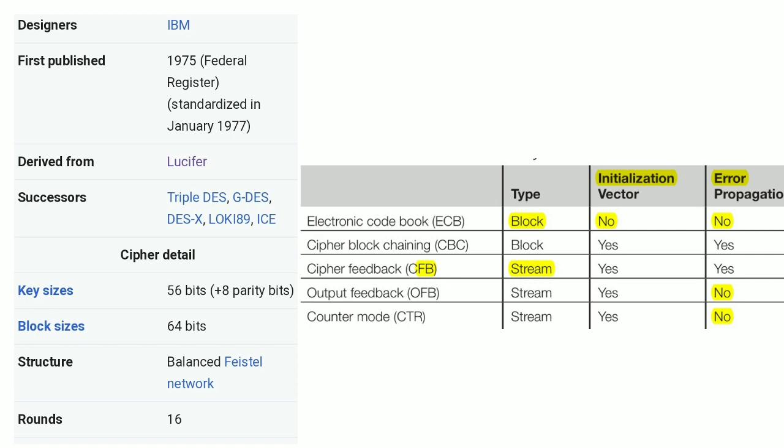The first parameter is whether the mode operates in block or stream mode — that is, whether the whole 64-bit block is encrypted or every bit is encrypted individually. The second is the initialization vector, a random value used at the first encryption step to break patterns in the plain text, so the same plain text encrypted multiple times produces different cipher texts. The third is error propagation — whether any error in the initial stages propagates through the rest of the encryption.